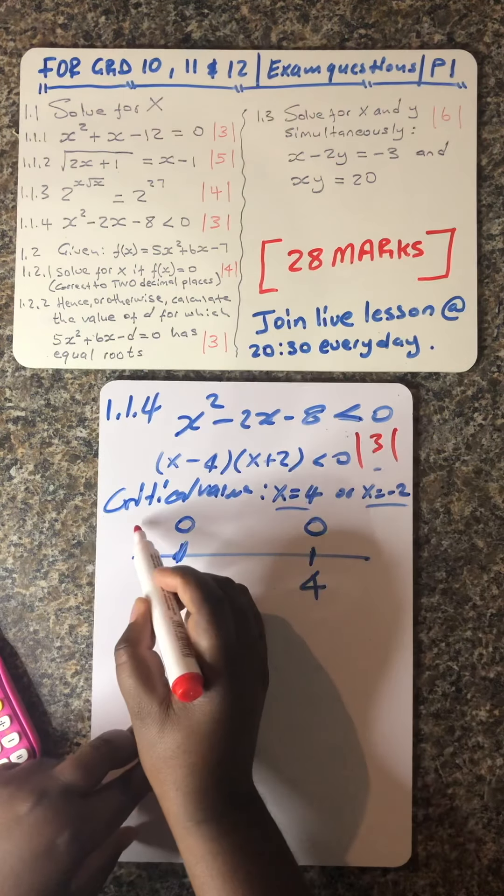Let's try another number on the side of positive 4. I'll use 95 — you can use any number greater than 4. It's equals to — can you see, I'm getting a positive number. So I'm only interested in the sign of that answer. We are saying: for which values of x, when you substitute into this equation, will the result be less than 0? Between negative 2 and 4, that's where the values of x give a result less than 0.